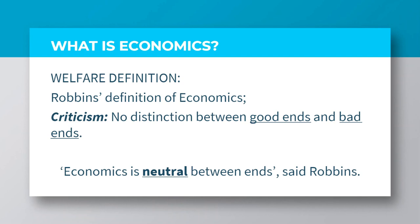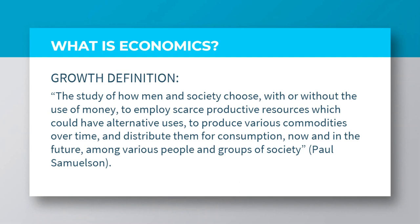One thing that the previous definitions have not considered so far is the issue of growth and development. So, let us look at the definition given by Paul Samuelson. Paul Samuelson defines economics as the study of how men in society choose, with or without the use of money, to employ scarce productive resources which could have alternative uses, to produce various commodities over time, and distribute them for consumption, now and in the future, among various people and groups of society. This definition was made dynamic when he included the element of time, thereby covering the theory of economic growth, since economic growth mainly deals with changes or improvement over time. He also covers aspects of economic activities like production, distribution, and consumption.